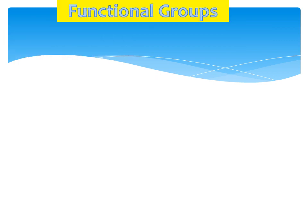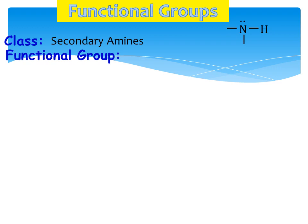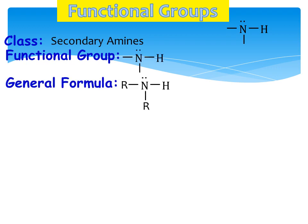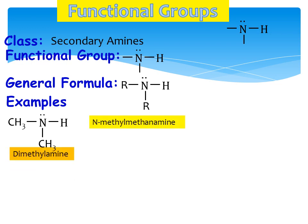Moving to secondary amines, the nitrogen is directly attached with two other carbons, having just one hydrogen — both spare valencies are satisfied with carbon atoms. The general formula is R2NH. An example with two methyl groups is commonly called dimethylamine. The IUPAC name is N-methylmethanamine — one methyl is taken as the substituent and the other as the base.